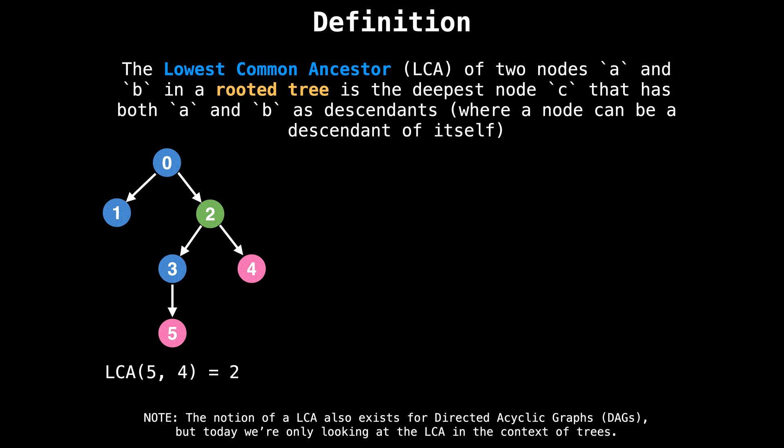the LCA of five and four is two, since two is an ancestor of both five and four. However, node two is not only just an ancestor of five and four, it is also the common ancestor which is furthest away from the root node. Hence, the lowest common ancestor.